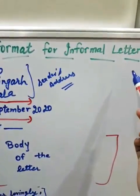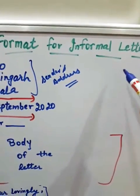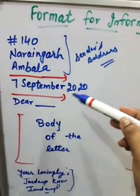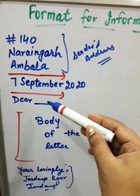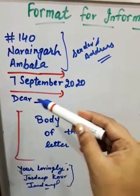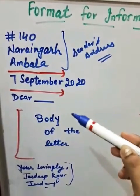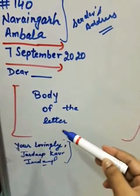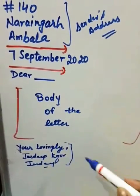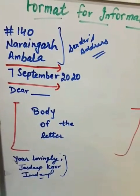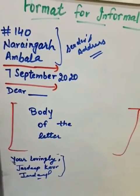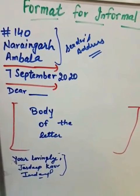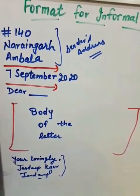So the format of informal letter is: sender address, leave one line, full date, leave one line, then salutation — dear father, dear mother, dear friend — then body of the letter, then closing phrase. This is the format for informal letter, and I will give you one informal letter to write.